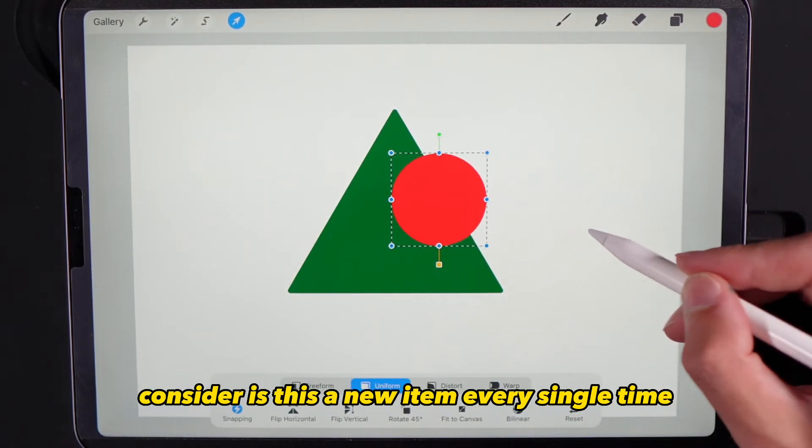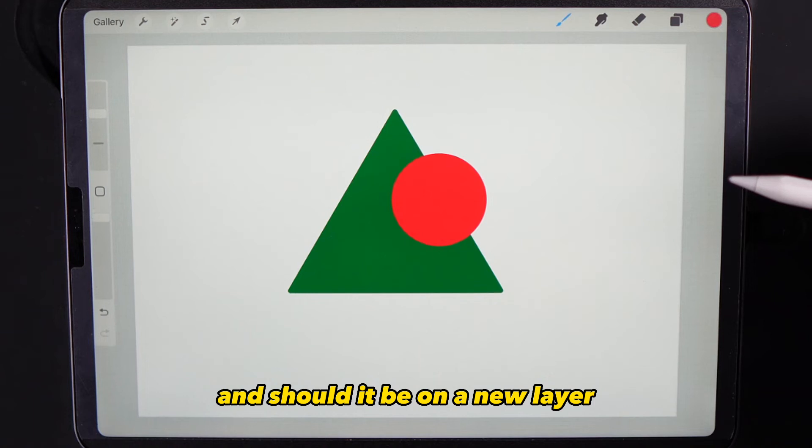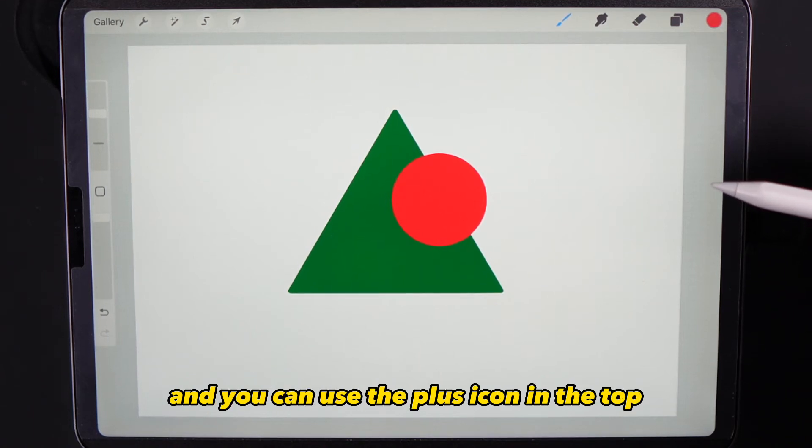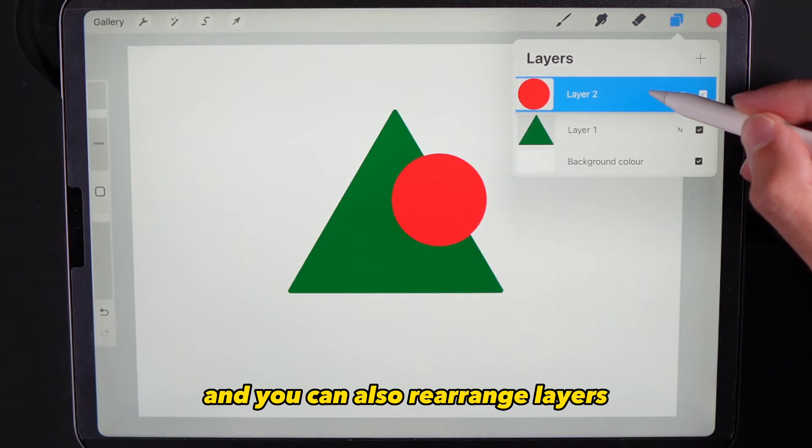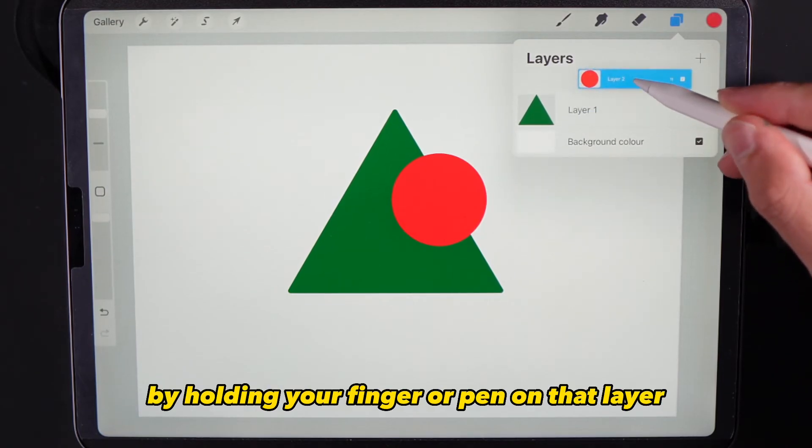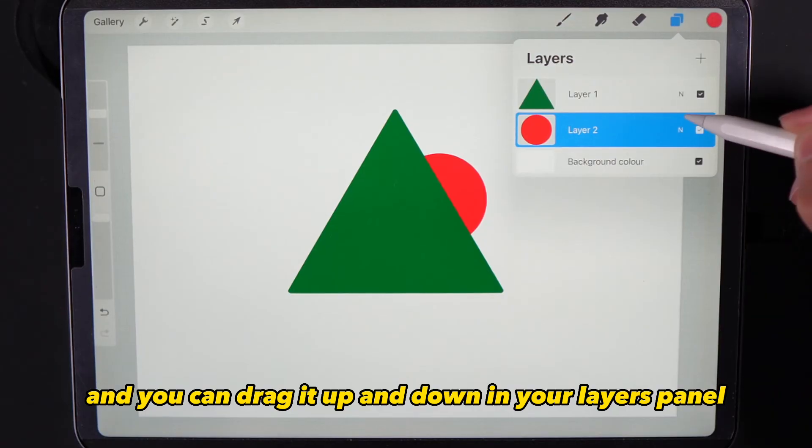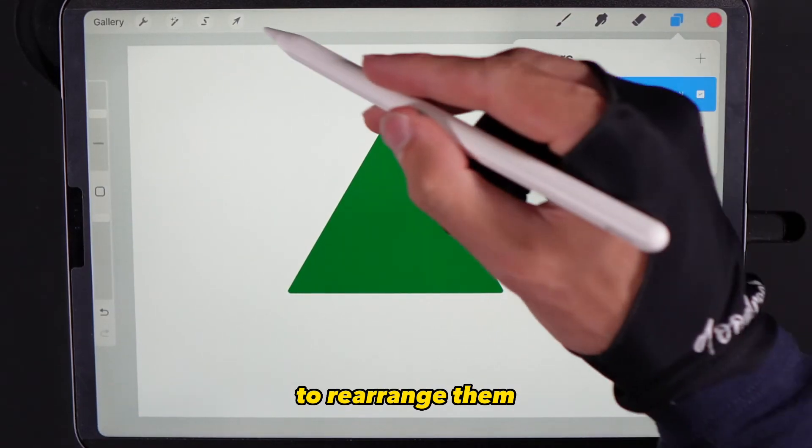When you're creating your art, consider is this a new item every time and should it be on a new layer. You can use the plus icon in the top right of your layers to create a new layer and you can also rearrange layers by holding your finger or pen on that layer and dragging it up and down in your layers panel.